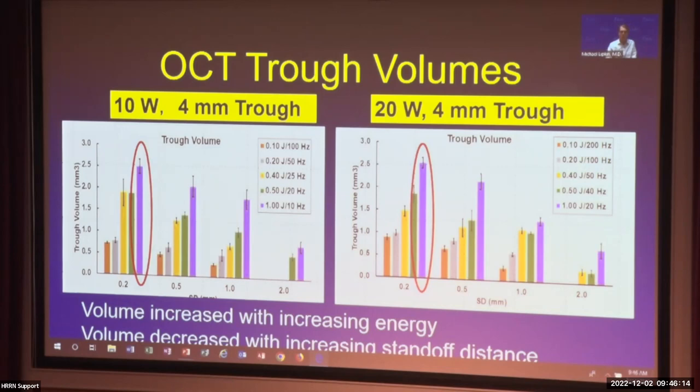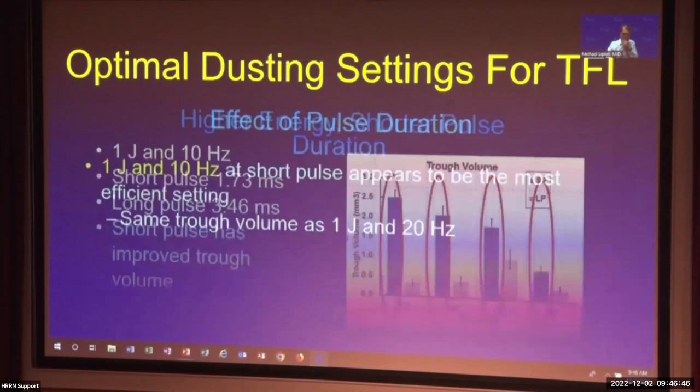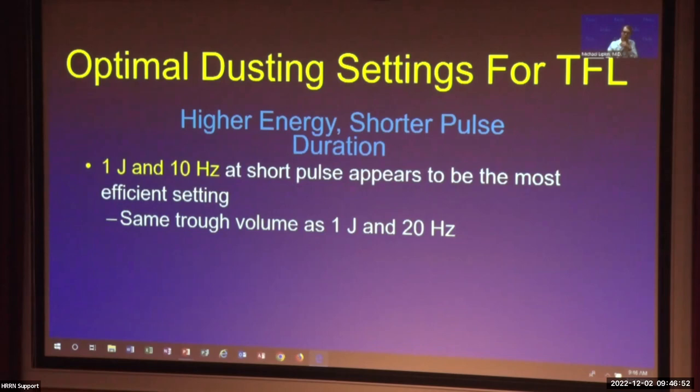Volume increased with increasing energy. For pulse duration effects, unlike holmium where long pulse modulation is more efficient for dusting, for thulium we looked at whether short or long pulse would be better. The pulse durations are much longer than holmium — short pulse is 1.73 milliseconds and long pulse is 3.46 milliseconds. Across the board at different standoff distances, short pulse is more efficient. So 1 joule at 10 hertz with short pulse appears to be the most efficient and probably safest setting for thulium.